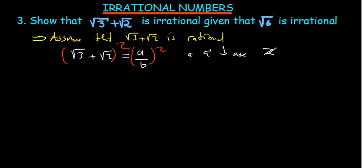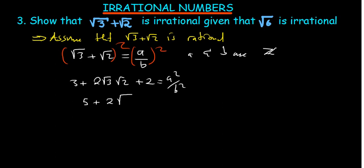Squaring gives us: root 3 squared is 3, plus 2 times root 3 times root 2, plus root 2 squared which is 2, equal to A squared over B squared. Adding 3 and 2 gives 5, and multiplying inside the root gives root 6, so we have 5 plus 2 root 6 equal to A squared over B squared. Taking 5 to the other side gives 2 root 6 equal to A squared over B squared minus 5, which simplifies to 2 root 6 equal to A squared minus 5B squared over B squared.